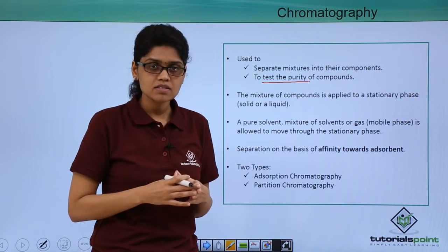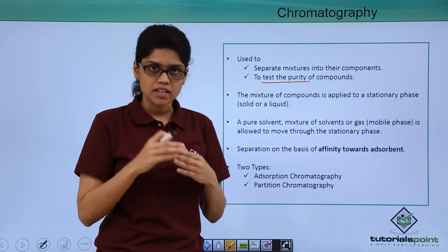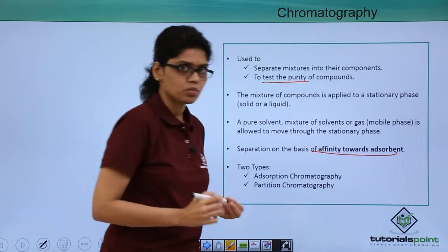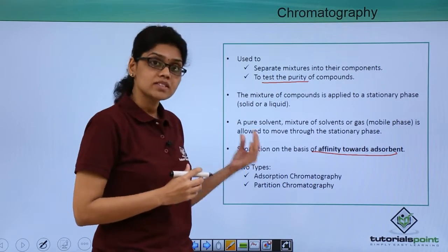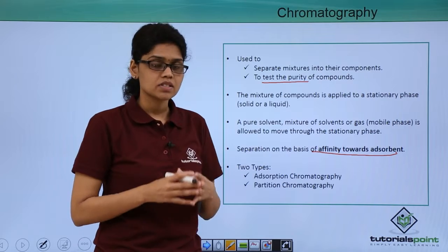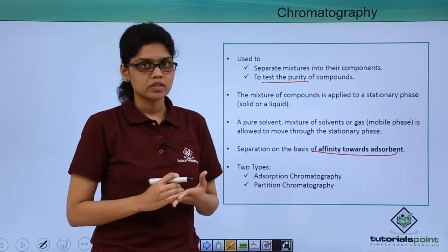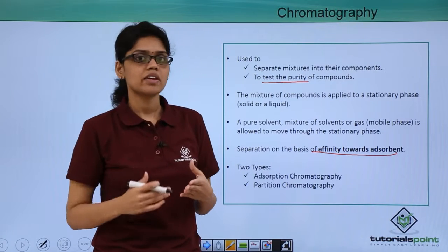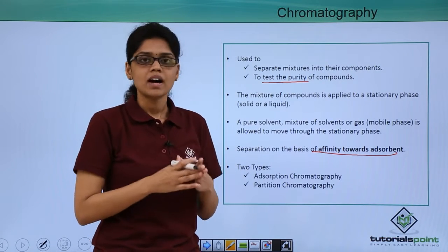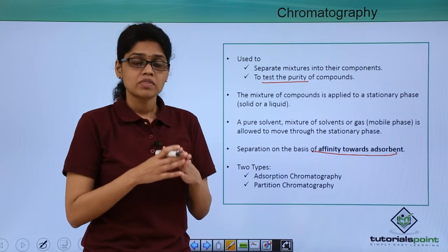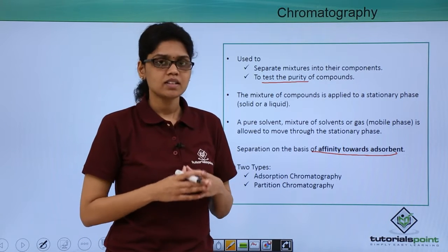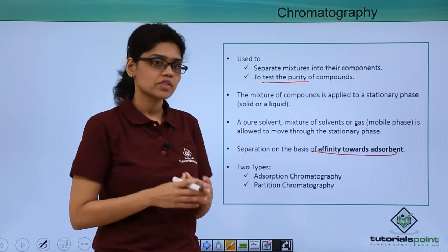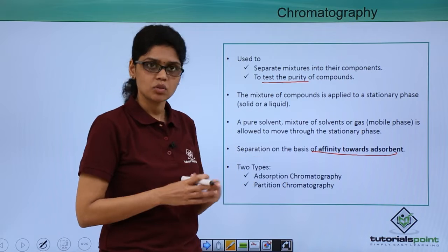How does the separation take place? Separation of compounds into constituent parts takes place based on the affinity of the compound with respect to the adsorbent. The two major types of chromatographic techniques are adsorption chromatography and partition chromatography. Adsorption chromatography can be further classified into two main types: column chromatography and thin layer chromatography. We will study each of these in detail, starting with column chromatography, which is an important type of adsorption chromatographic technique.